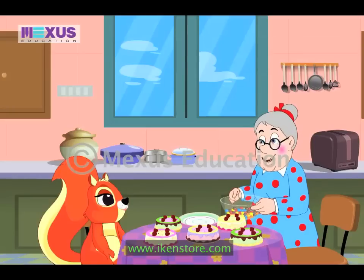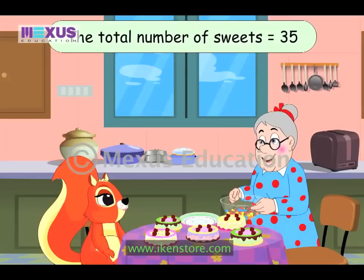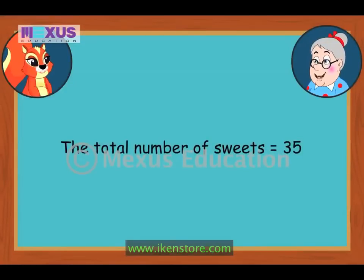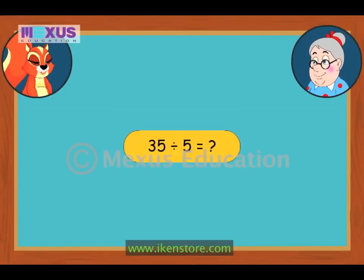Before we start eating the cake, I want you to share these sweets equally among the 5 cakes. You will also get another chance to practice mental division. This time, the total number of sweets to be shared equally is 35. You already know that the total number of cakes is 5, so I have to solve 35 divided by 5 to find out how many sweets to put on each cake.